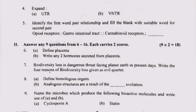Question 5: Identify the first word pair relationship and fill in the blanks with suitable words for the second pair. Opioid receptors: gastrointestinal tract. Cannabinoid receptors: Brain.